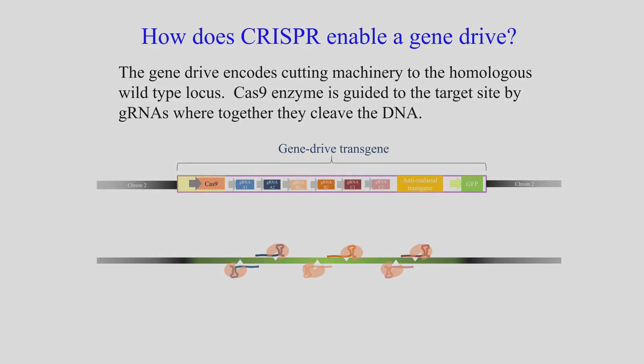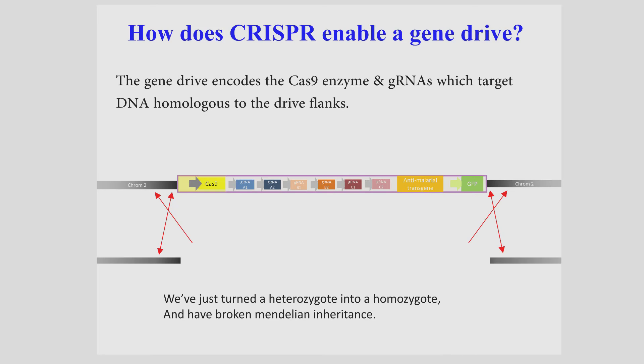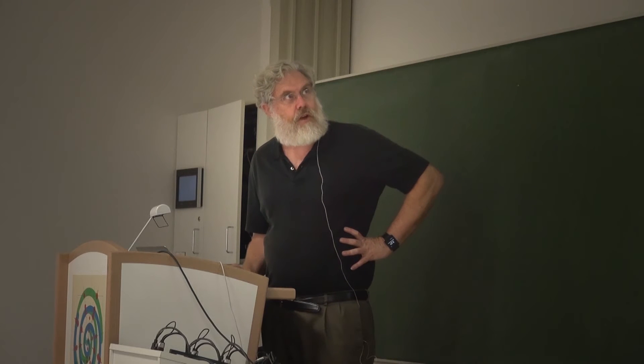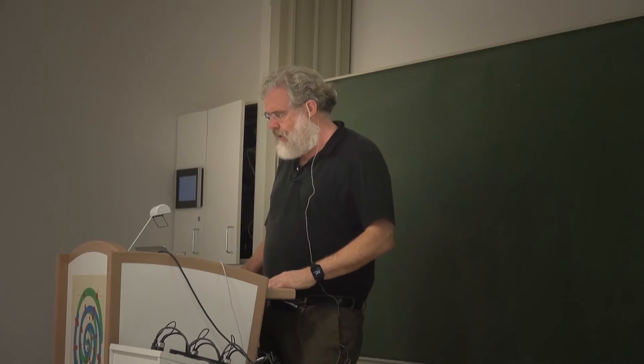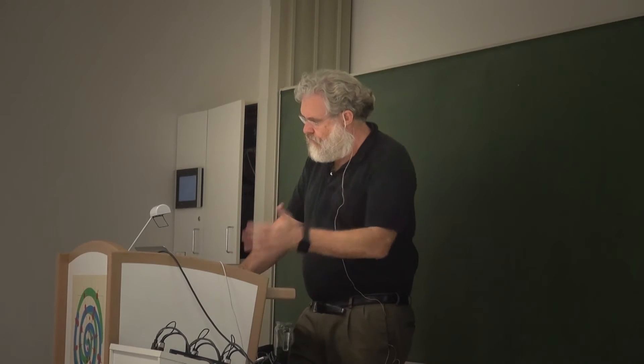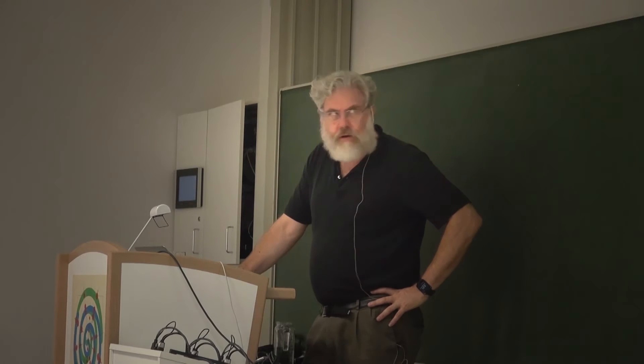This is how CRISPR works in a gene drive. We target typically an essential gene, not just with one CRISPR but with six or so different CRISPR guide RNAs, each with the same Cas9 protein. They make cuts and shred that essential gene. The only way it will survive — whether in a somatic cell or a gamete — is by replacing that essential gene with the whole cassette, which includes the guide RNAs, the Cas9, other markers, and in this case an anti-malaria transgene.